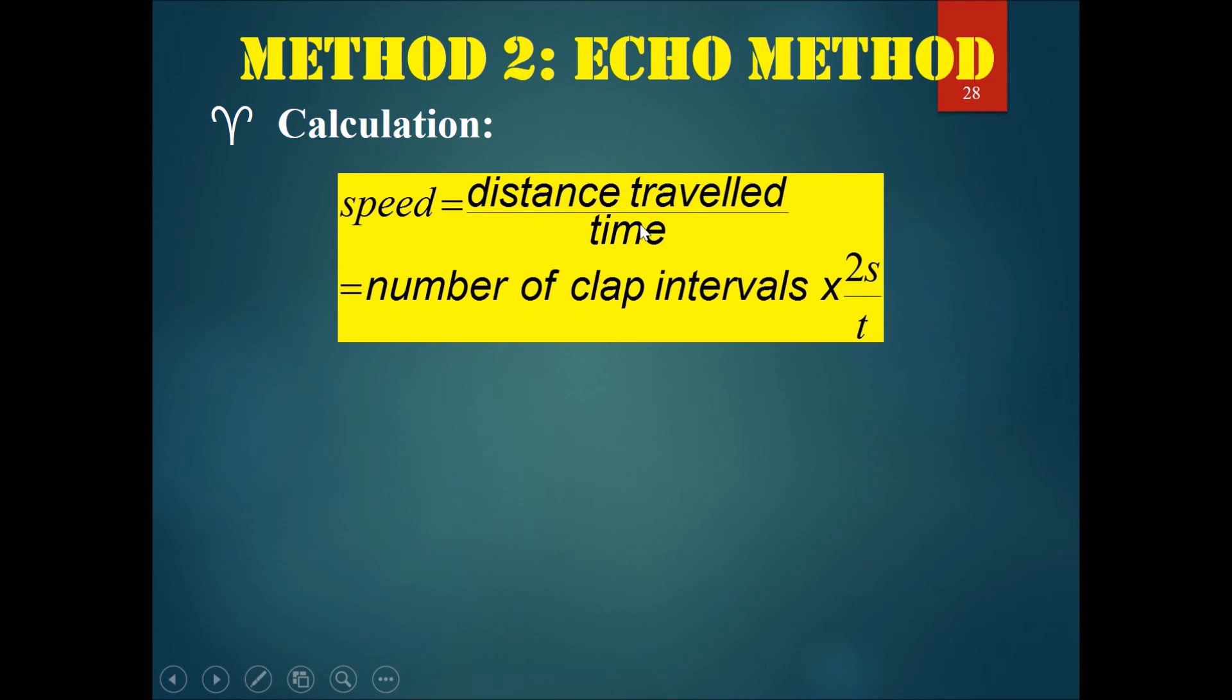Speed would be the distance traveled over time, which would be the number of clap intervals times 2s—that would be the total distance traveled by the sound—and then we divide all of this by t, the time taken to travel all those 50 claps of sound.